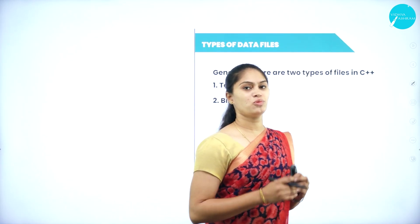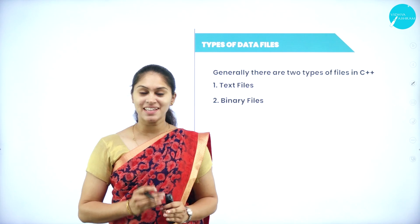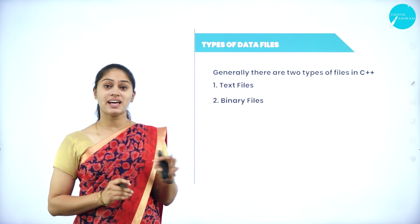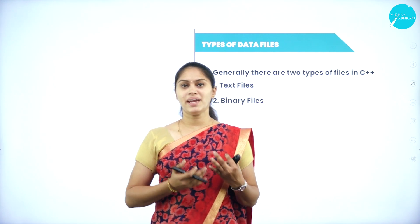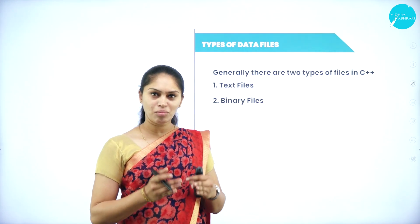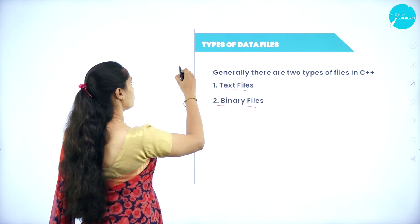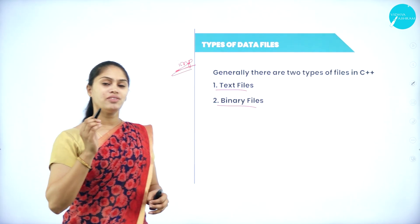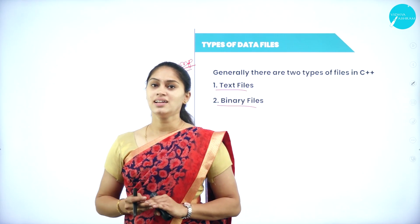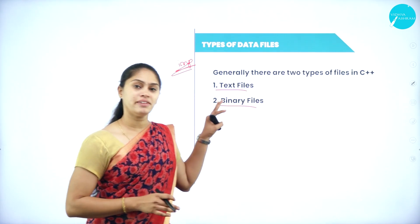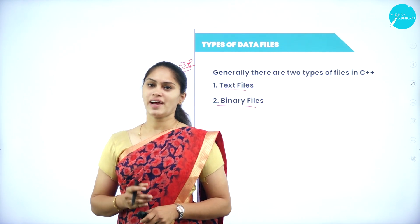Now we'll see what are the types of files. The types of files are based on how data is stored and how it is retrieved. Based on that context, data files are divided into two types: text file and binary file. This is also an important question — you may expect questions about the types of files or the differences between text and binary files.